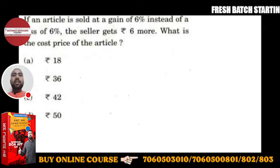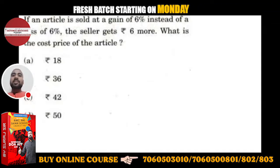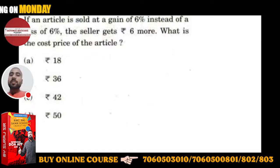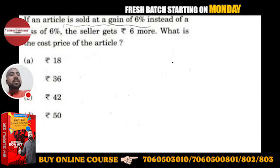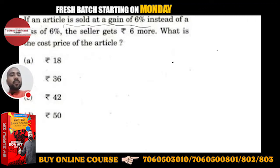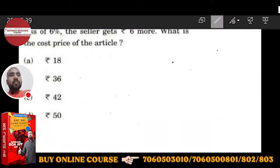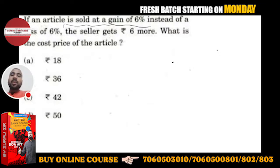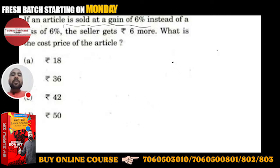Another question: if an article is sold at a gain of 6% instead of a loss of 6%, the seller gets ₹6 more. What is the cost price of the article? Agar main kisi article ko 6% gain mein bechu, 6% loss ke bajaye, to mujhe 6 rupaye zyada milenge.